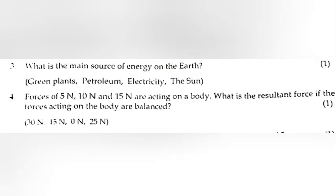3. What is the main source of energy on the earth? Answer: the sun. 4. Forces of 5N, 10N, and 15N are acting on a body. What is the resultant force if the forces acting on the body are balanced? Answer: 0N.